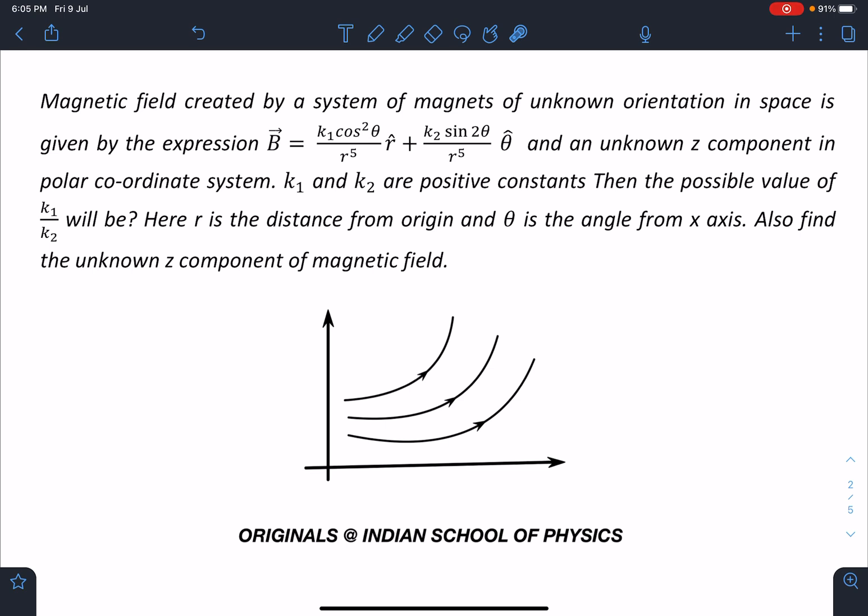So let's read this problem again. I have reframed this problem with some more insight about Ampere's law and divergence concepts. Magnetic field created by a system of magnets of unknown orientation in space is given by the expression: vector B equals k1 cos squared theta by r to the power 5 r cap plus k2 sin 2 theta by r to the power 5 theta cap, and an unknown z component in polar coordinate system. k1 and k2 are positive constants. Then the possible value of k1 by k2 will be?